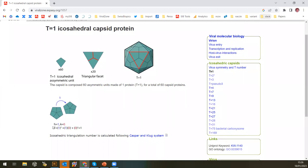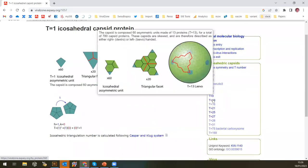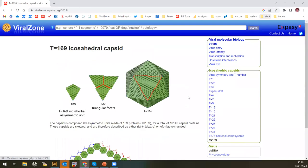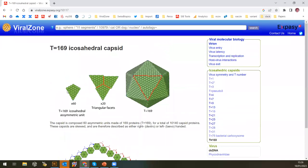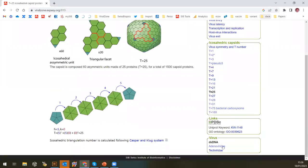The capsid is labeled by what we call the Caspar and Klug system, which are two authors that designed the system a long time ago. Basically, there's a calculation made on how you can go from one pentamer to another pentamer, because icosahedrons are made of 12 pentamers. And you can add a lot of hexamers to it to make bigger capsids. Like here, for example, you have hexamers added. And the more you add hexamers, the bigger is the capsid up to this one. You barely see the pentamers—there are many hexamers around.